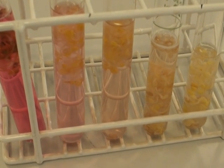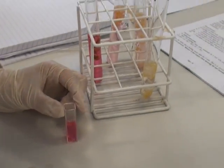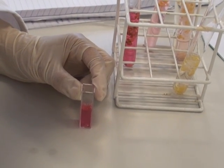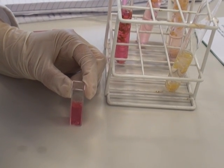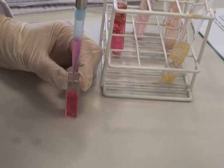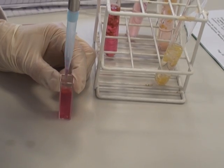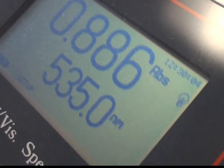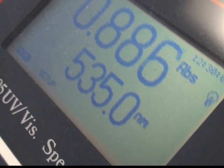After extraction, the tubes look like this with different amounts of the red anthocyanin pigment extracted in the different treatments. These are then put into a spectrophotometer cuvette with a fixed path length and the absorbance of the pigment is measured in the spectrophotometer at 535 nanometers, the maximum absorbance of the anthocyanin pigment. Here we can see that the reading at this wavelength is 0.886 absorbance units.